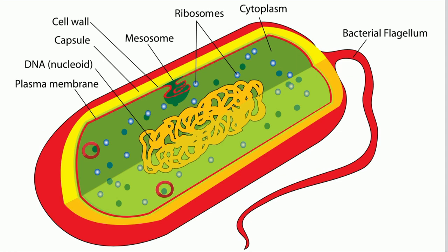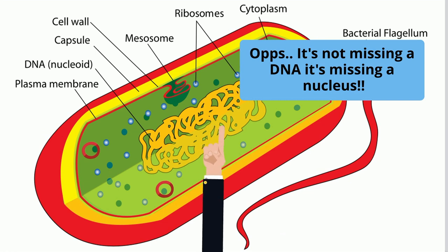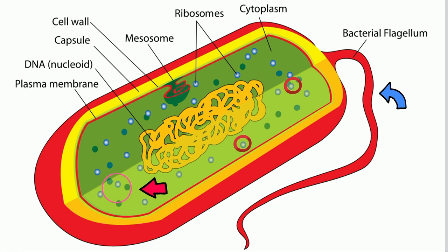You will also find genetic material inside a bacteria cell. Although it is missing a nucleus, you will find most of this genetic material in a nucleoid, which is a single strand of DNA that is folded. You will also find circular strands of DNA called plasmids. In addition, you will find gas vacuoles, and some bacteria have a whip-like tail called a flagellum.